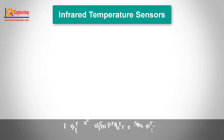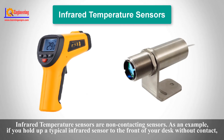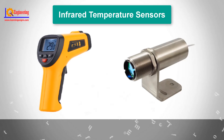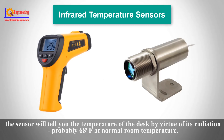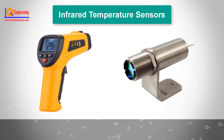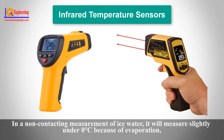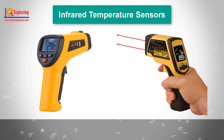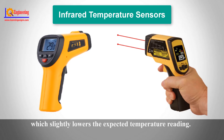Infrared temperature sensors are non-contacting sensors. For example, if you hold a typical infrared sensor in front of a surface without contact, the sensor will tell you the temperature of that surface by virtue of its radiation — probably 68 degrees Fahrenheit at normal room temperature. In a non-contacting measurement of ice water, it will measure slightly under 0 degrees centigrade because of evaporation, which slightly lowers the expected temperature reading.